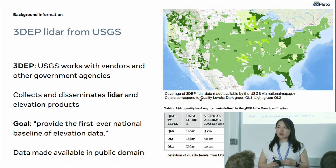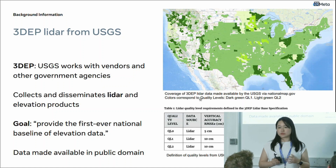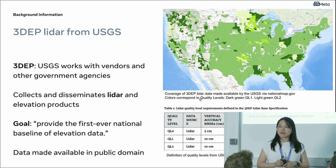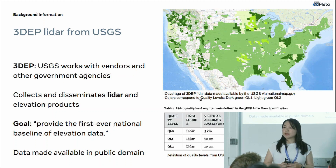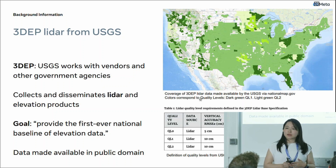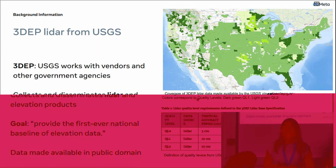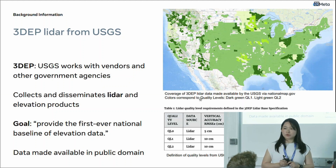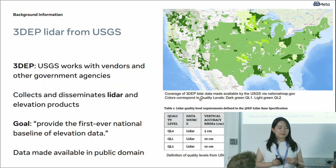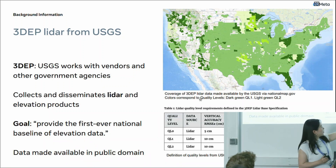The goal of USGS for this program is to acquire LiDAR data across the nation to provide the first-ever national baseline of elevation data. Since they work with different vendors and government agencies to collect datasets, they define a quality standard — which they call quality levels — for data collections from these different vendors and agencies. Quality level zero is the highest quality, while quality level two is the lowest, and this quality level is mostly determined by the accuracy and the point densities.